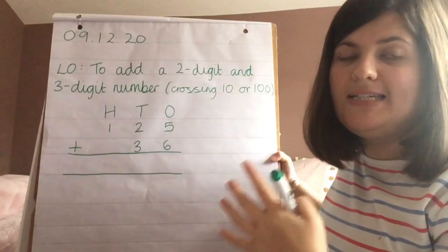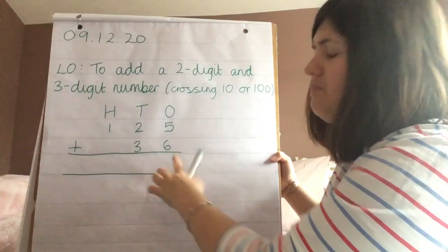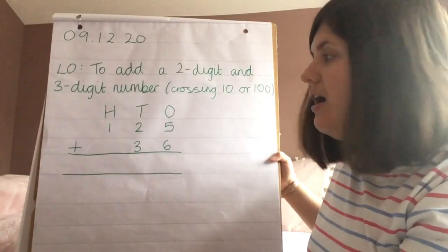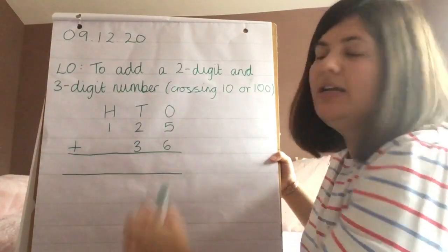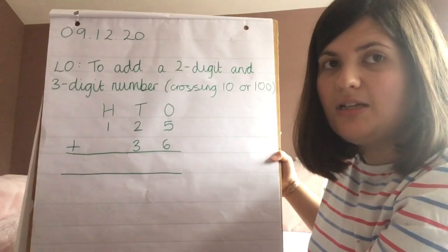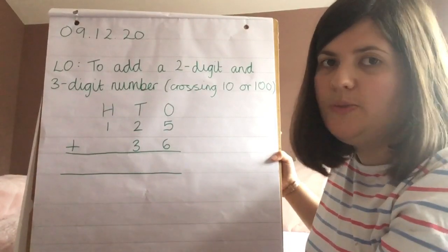We always start adding in the ones column just in case there is an exchange, because as we already know, the highest digit you can have in one column is a nine, and if it adds to more than a nine we'll need to exchange.